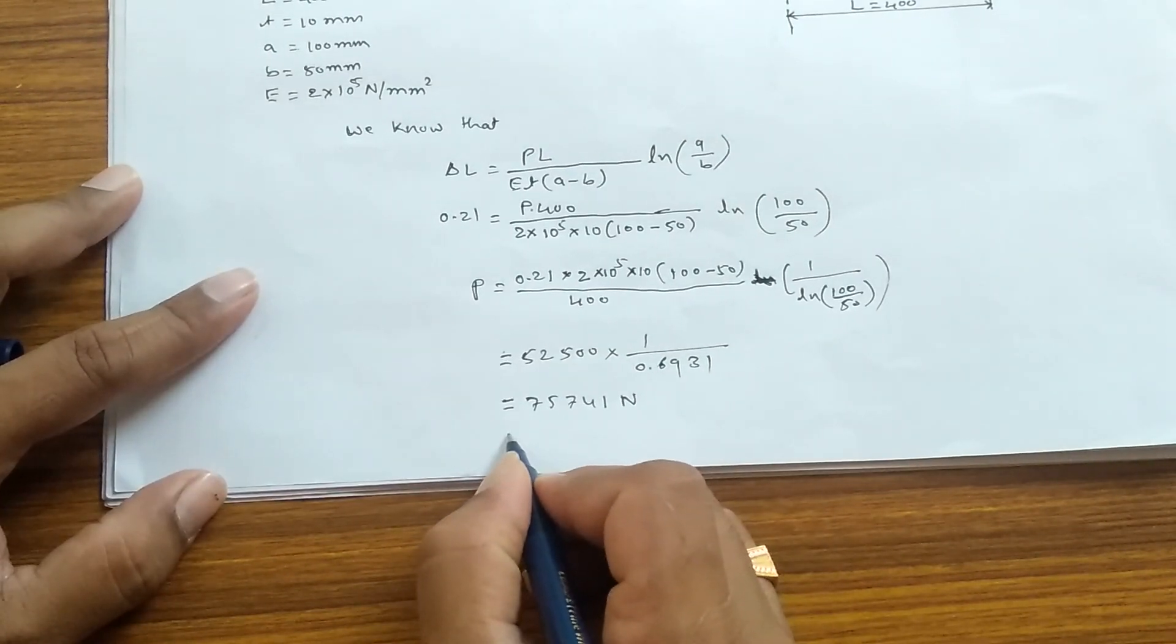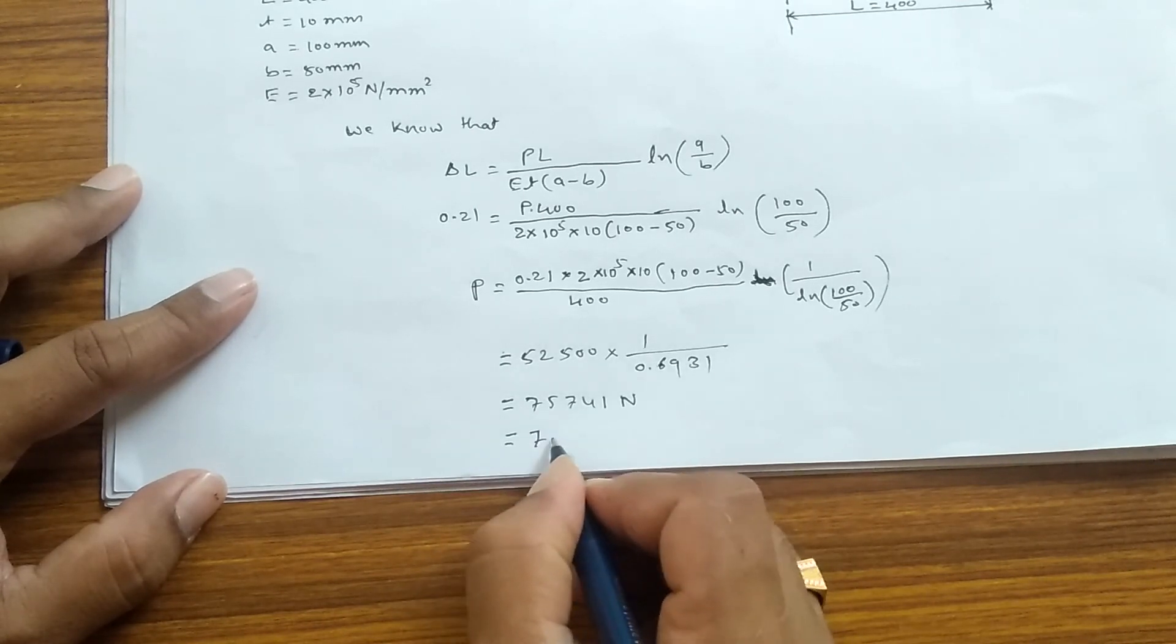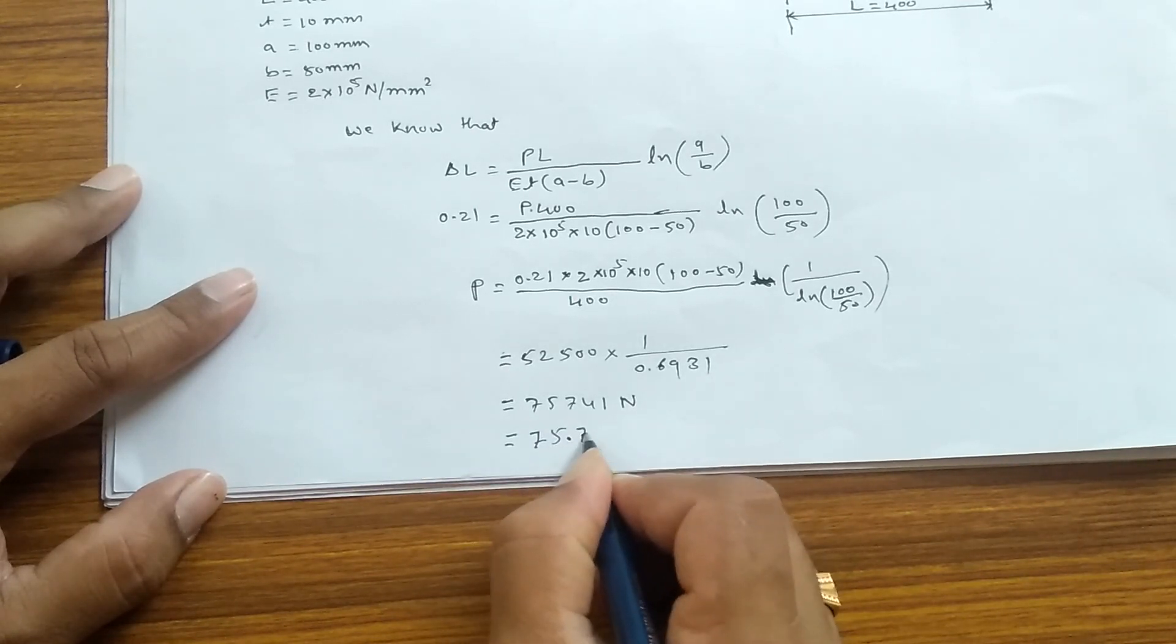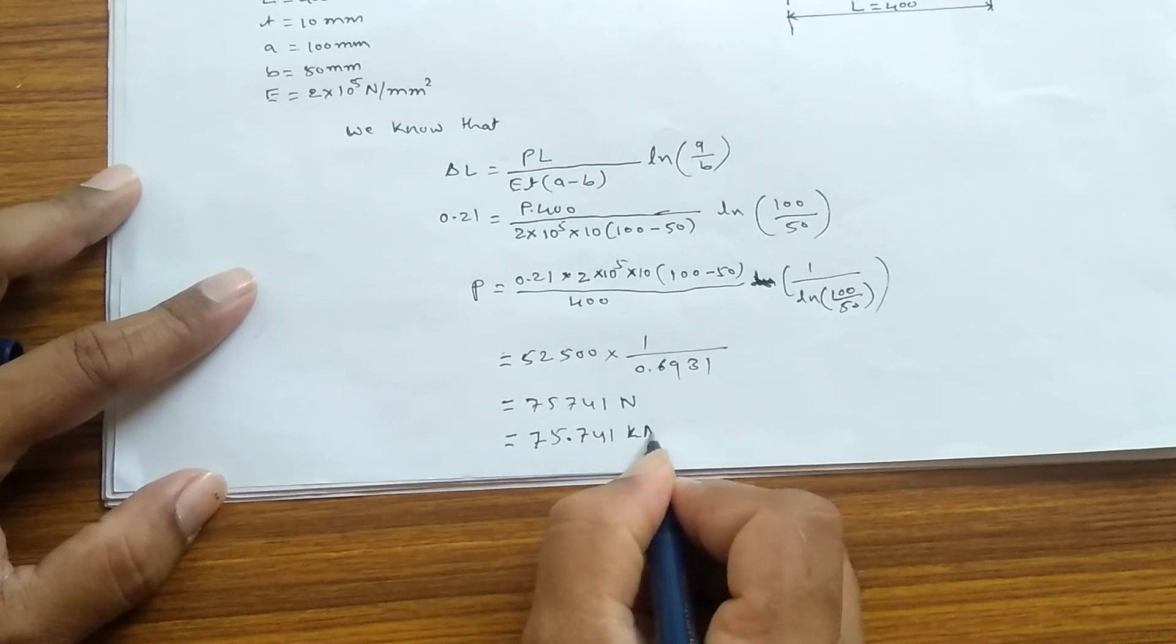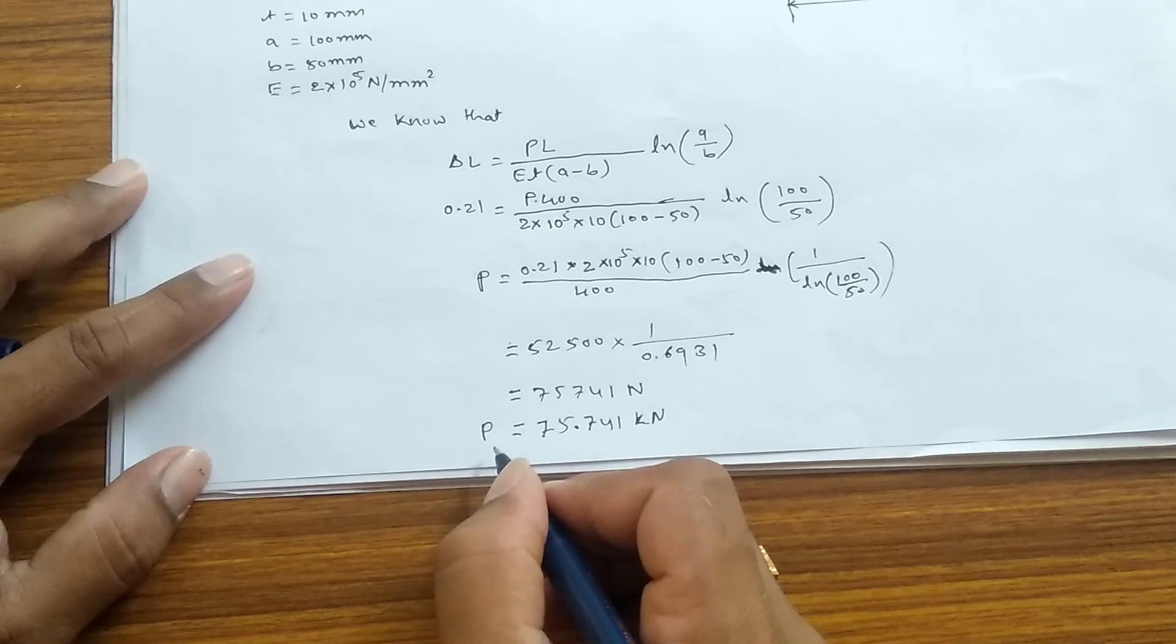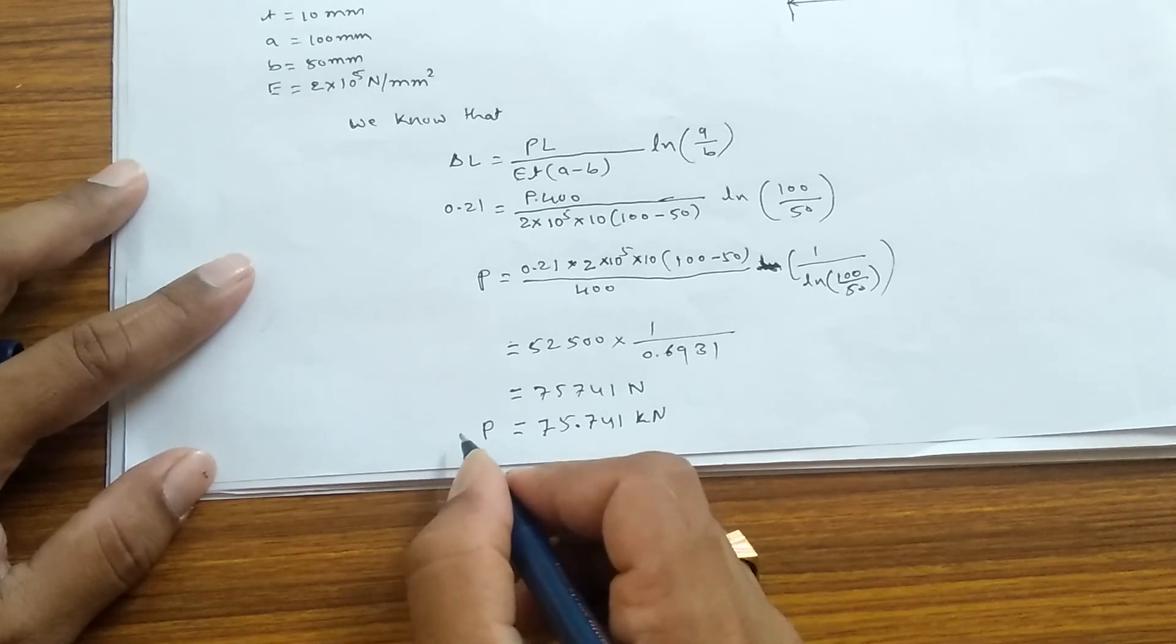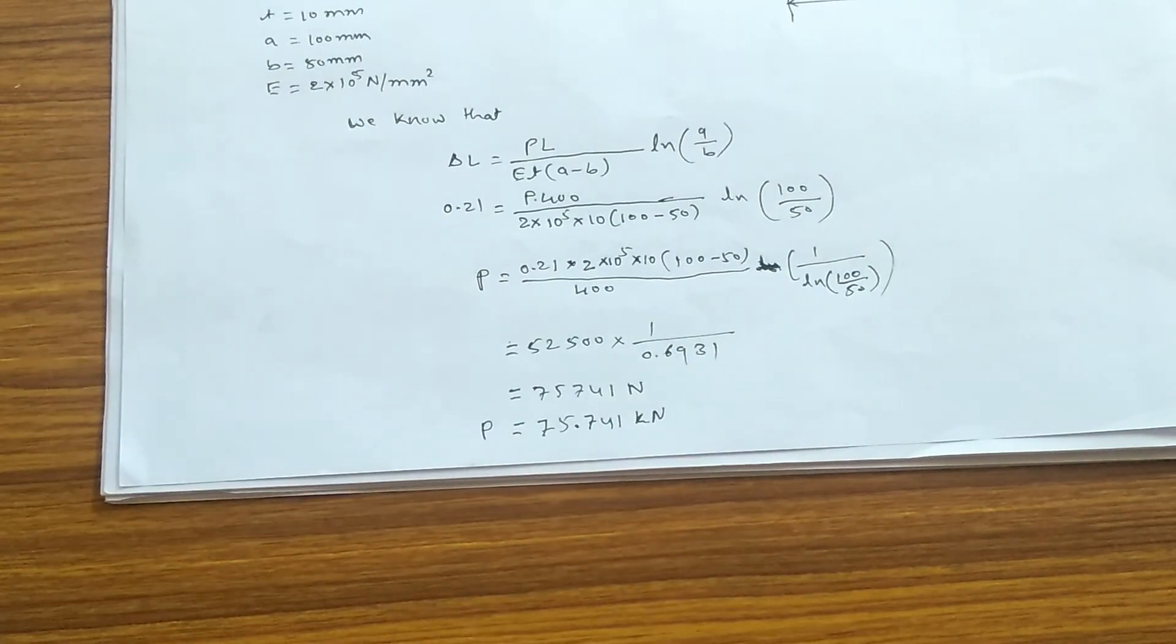So this one we can also return as in kilo-Newton, that is 75.741 kilo-Newton. So this is the force we applied here to extend 0.021 mm.